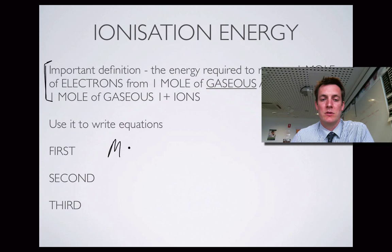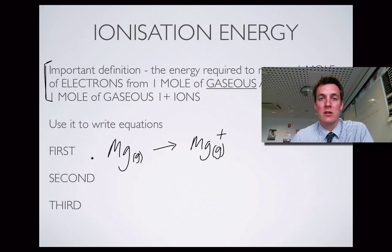For example, if I wanted to write the first ionization energy for magnesium: if we took an electron away from the magnesium atom in the gaseous state, we'd turn it into a magnesium ion in the gaseous state. What charge would it have? Well, we've only removed one electron because it's the first ionization energy, and we'd have an electron left over.